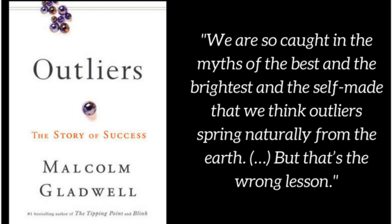Chapter 4: The Trouble with Geniuses, Part 2. In the continuation of his exploration of intelligence and success, Malcolm Gladwell presents the story of the Termites, a group of profoundly gifted individuals with IQs above 150. Identified and studied as children with extraordinary potential, their academic and professional achievements were expected to be exceptional. However, as Gladwell delves deeper into their lives, he reveals that not all of them fulfilled the lofty expectations placed upon them, leading him to question assumptions about intelligence and its direct correlation to achievement.